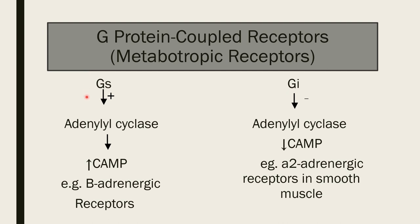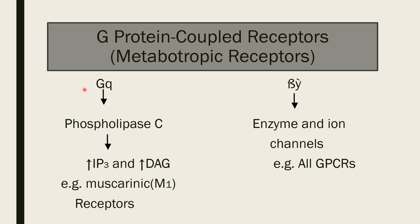There are various types of G proteins: Gs, Gi, and Gq. Gs and Gq are stimulatory, activating adenylyl cyclase and increasing cyclic AMP, causing depolarization. An example is the beta adrenergic receptor. Gi is inhibitory and inhibits adenylyl cyclase, decreasing cyclic AMP — an example is the alpha-2 adrenergic receptor. Gq activates phospholipase C enzyme, increasing inositol triphosphate and diacylglycerol, which raises calcium levels. Calcium acts as a third messenger. An example is the muscarinic M1 receptor.